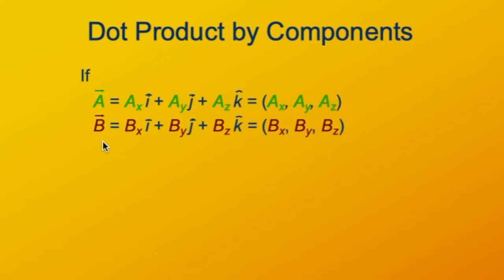B is defined in the same way. B sub x is the x component times i hat, the unit vector in the x direction. B sub y, the y component times the unit vector j hat in the y direction. B sub z times the unit vector k hat in the z direction.